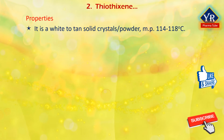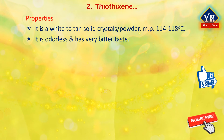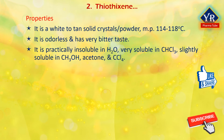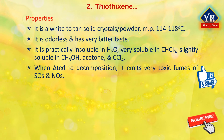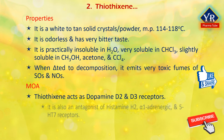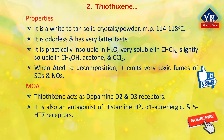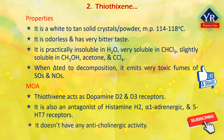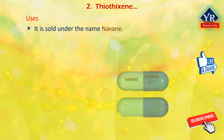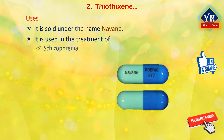Thiothixene is a white to tan solid crystal or powder with a melting point between 114 and 118 degrees centigrade. It is odorless with a very bitter taste. It is practically insoluble in water, very soluble in chloroform, and slightly soluble in methanol, acetone, and carbon tetrachloride. When heated to decomposition, it emits very toxic fumes of sulfur oxides and nitrogen oxides. It acts primarily as a highly potent antagonist of the dopamine D2 and D3 receptors, and is also an antagonist of histamine H2, alpha-1 adrenergic, and serotonin 5-hydroxytryptamine-7 receptors. It does not have any anticholinergic activity. Antagonism of the D2 receptor is thought to be responsible for the antipsychotic effects of thiothixene. Thiothixene is sold under the brand name Navane and is used in the treatment of psychosis like schizophrenia and bipolar mania.